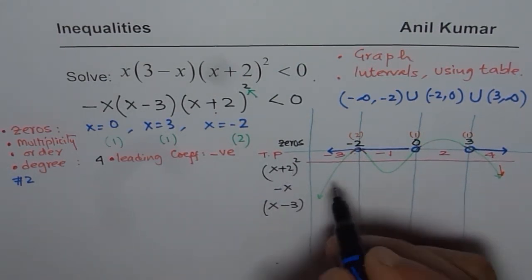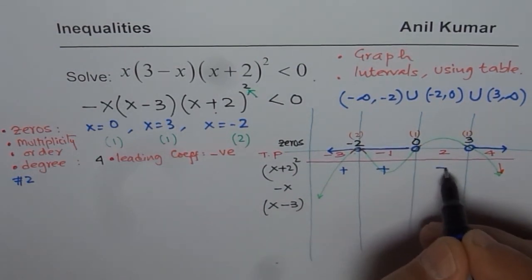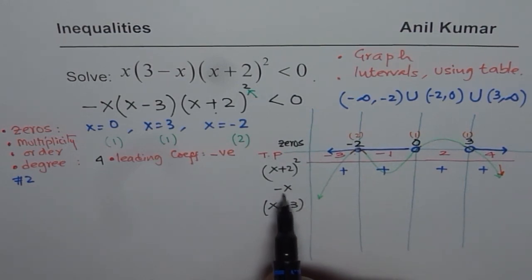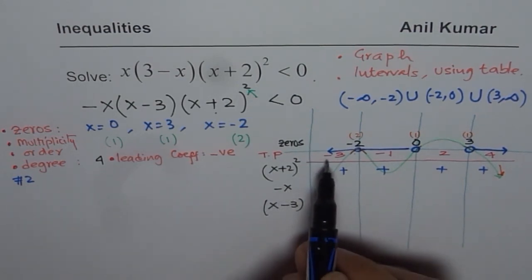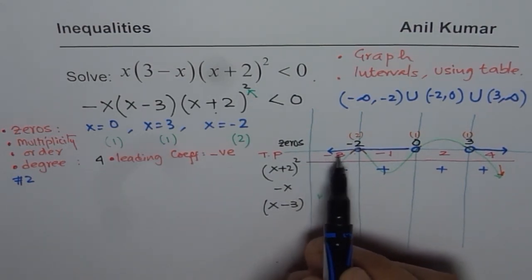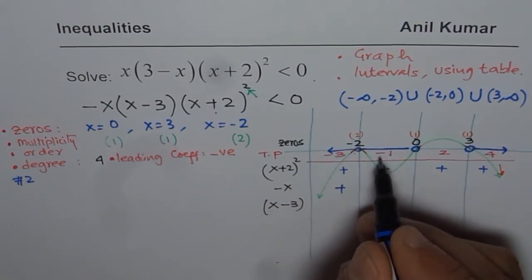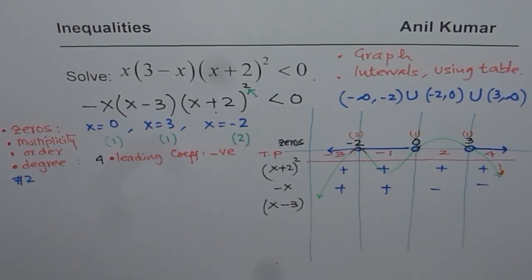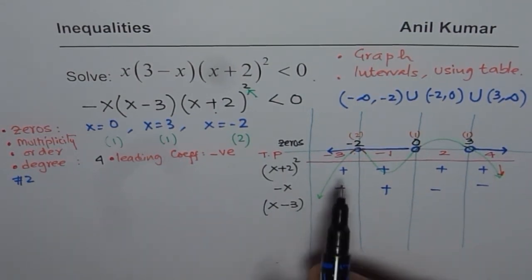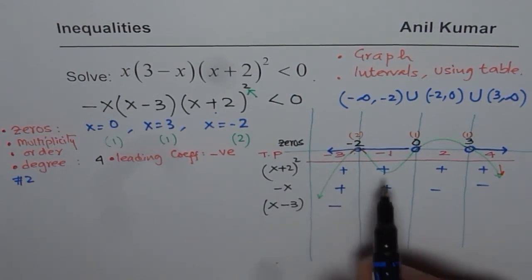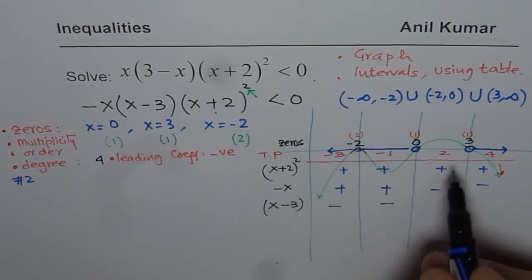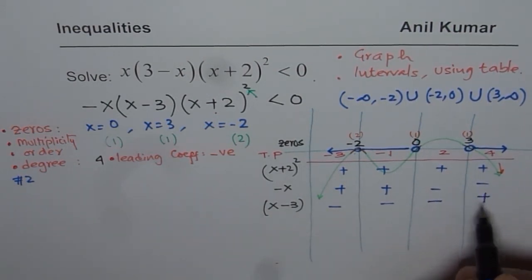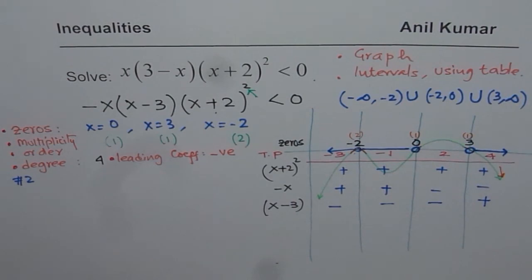(x plus 2) whole square is always positive, so we write positive in all four regions. For minus x: negative 3 gives positive, negative 1 gives positive, 2 gives negative, 4 gives negative. For x minus 3: substituting minus 3 gives negative, minus 1 gives negative, 2 gives negative (2 minus 3), but 4 minus 3 gives positive.